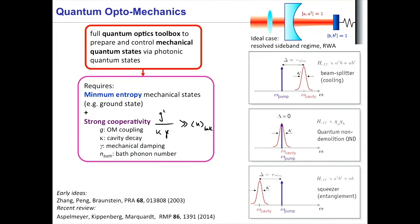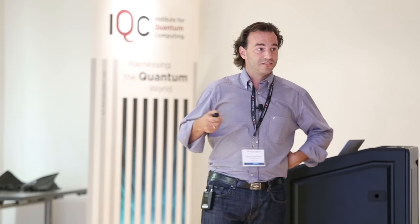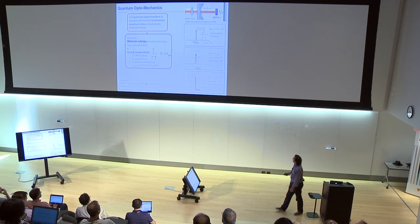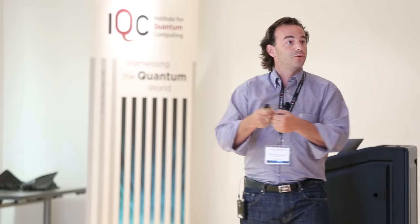I give you a very quick quantum optics perspective on that. The prototype scenario is an optical or microwave cavity coupled to a mechanical oscillator, the frequency of which is coupled to the mechanical motion. If you operate in the resolved sideband regime, you can distinguish three different scenarios when you pump this cavity. If you pump on the red side, you scatter photons into the cavity by taking energy away from the phonons of the mechanical system. If the cavity decays fast enough, this cools your system by extracting a phonon from the mechanical motion.